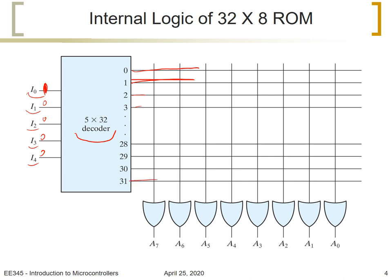And this ROM which is 32 by 8, as we said, it has 5 inputs here and it has 8 outputs which we call A7, A6, A5, etc., until A0.